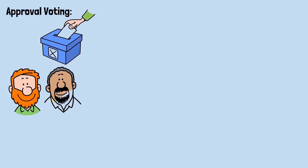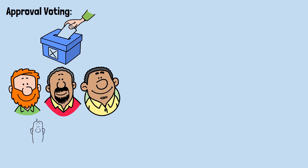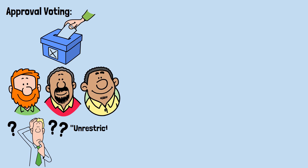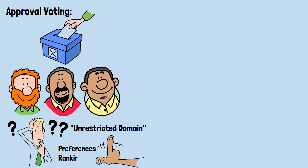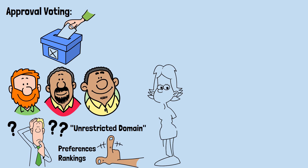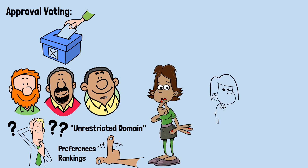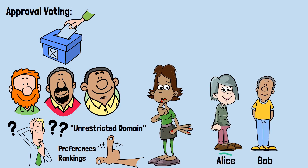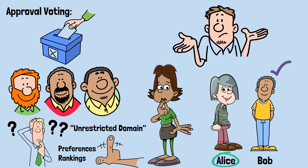Approval voting — vote for as many candidates as you approve of, most approvals wins — technically violates the unrestricted domain criterion in a subtle way: it doesn't let you express intensity of preferences or rankings. But more importantly, it creates strategic voting problems. If Alice and Bob are frontrunners and you prefer Alice, should you also approve Bob as a compromise? Or does that hurt Alice? The optimal strategy becomes a guessing game.